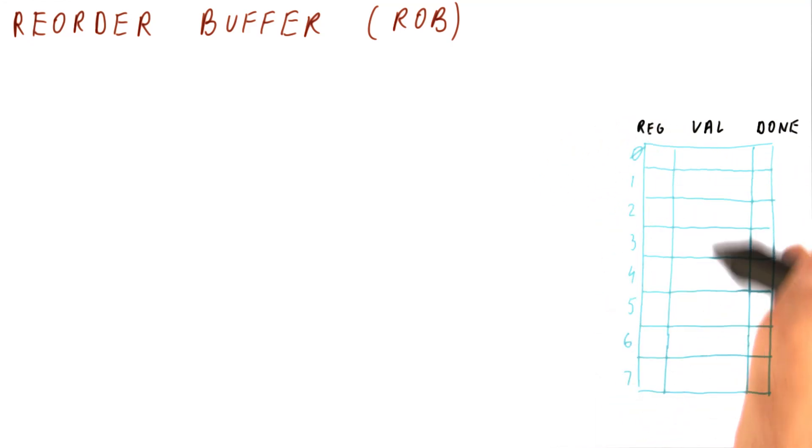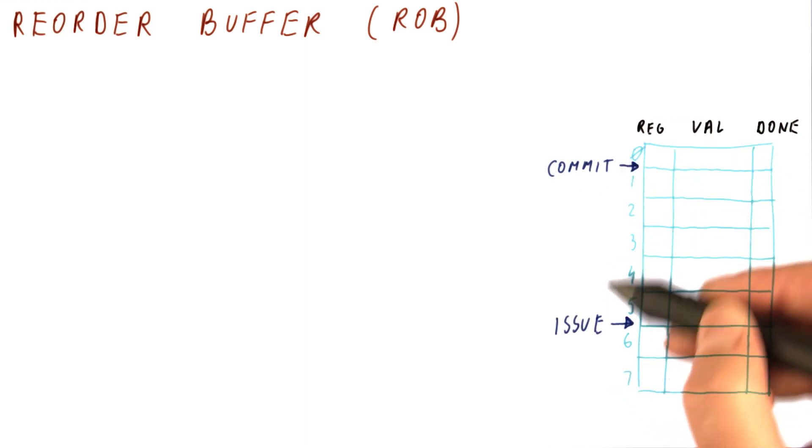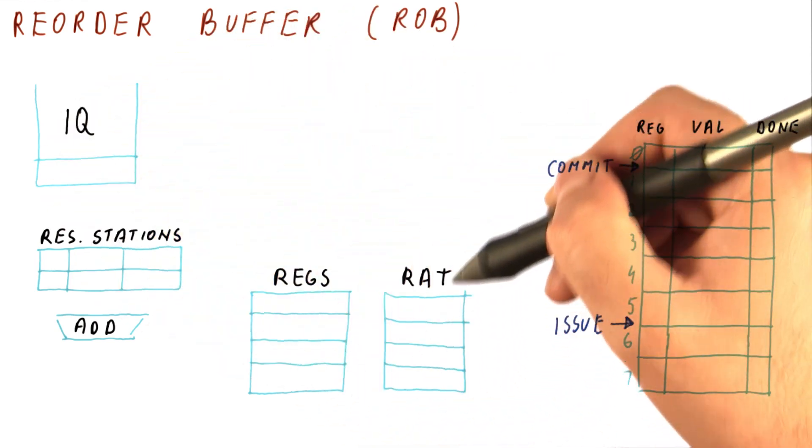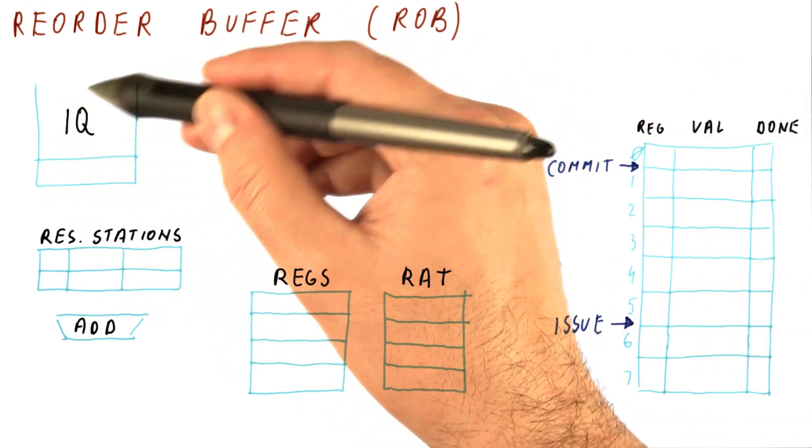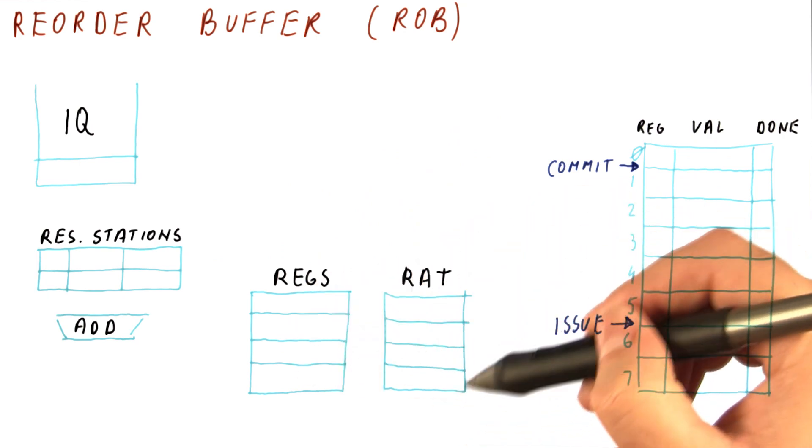Now that we know what the reorder buffer is supposed to look like, let's see how it's used. For that, we need the reorder buffer with its commit and issue points, and we need the rest of the processor that we have already seen: the instruction queue, reservation stations, registers, and the RAT.